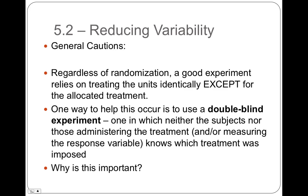Some general cautions: regardless of randomization, a good experiment relies on treating all units identically except for the allocated treatment — that's control. One way to help this is to use a double blind experiment, where the subject doesn't know which treatment they're getting and neither does the person administering the treatment or measuring the response variable.